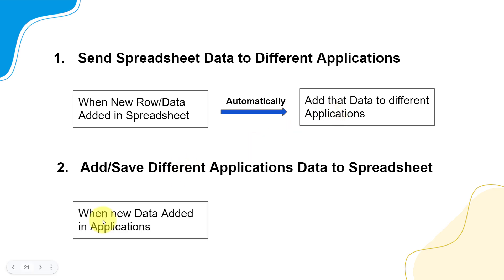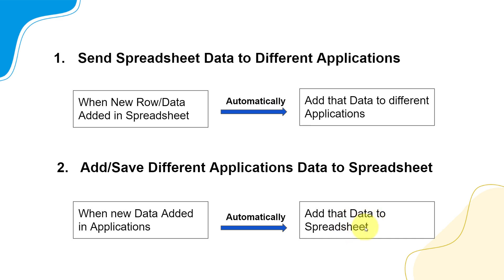The second use case is: whenever new data is added into an application — it could be a form response, a new response received in a form builder software, or a new contact created in a CRM application — then automatically collect that data and add it into your favorite spreadsheet application. By connecting any application with your favorite spreadsheet application, you can automate a lot of your tasks.